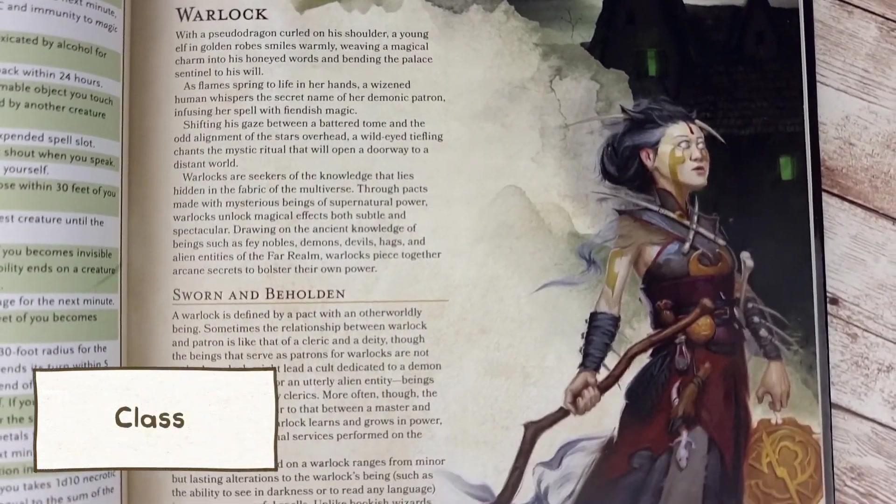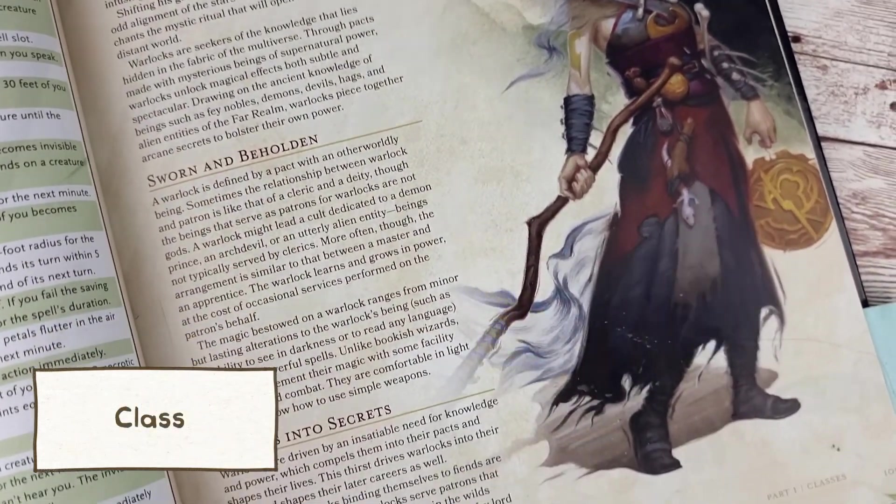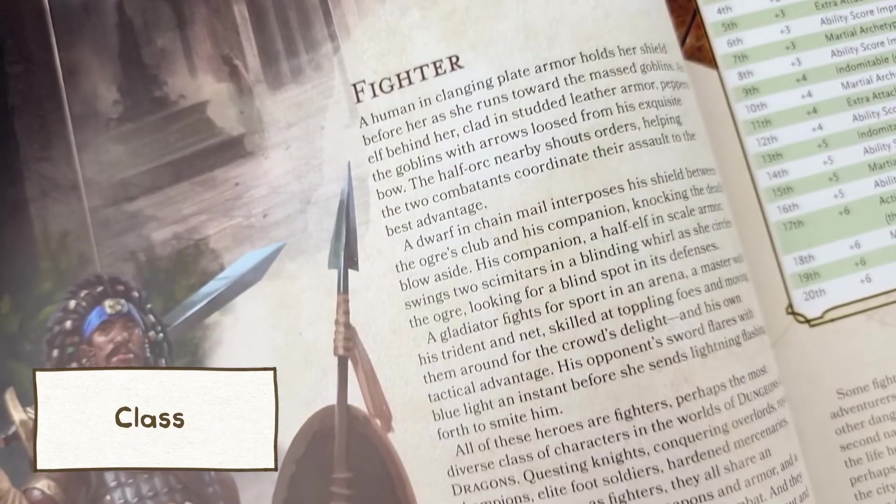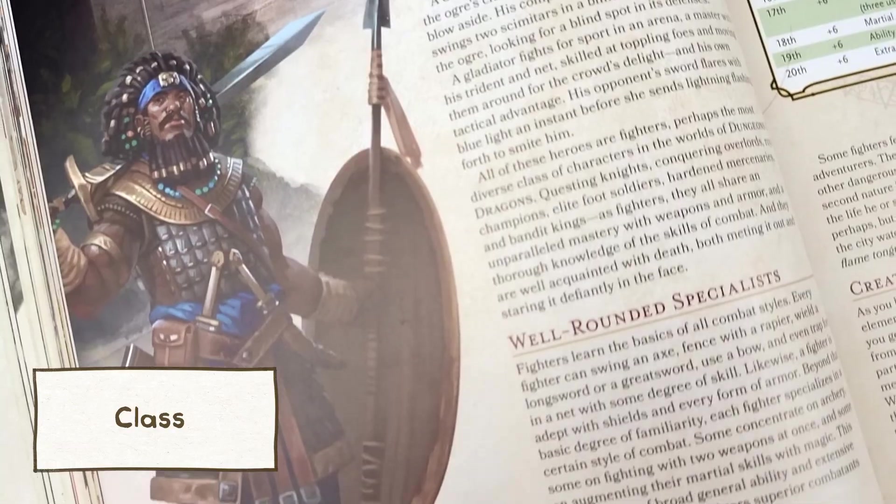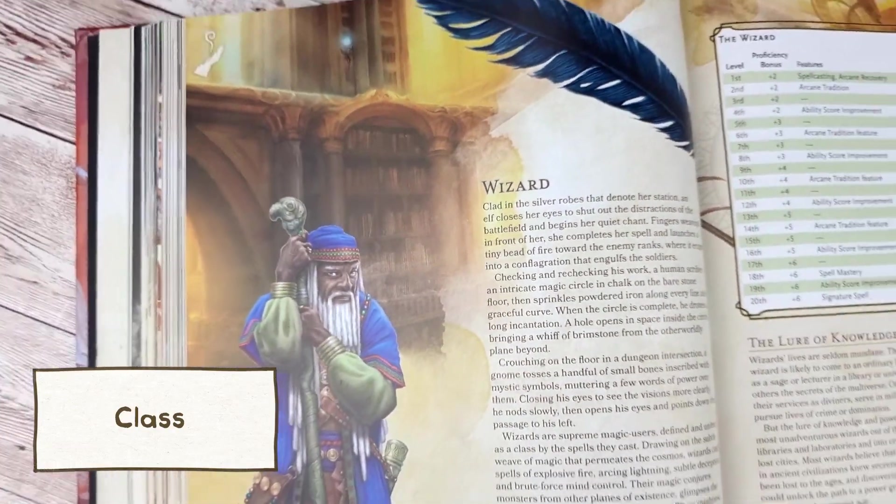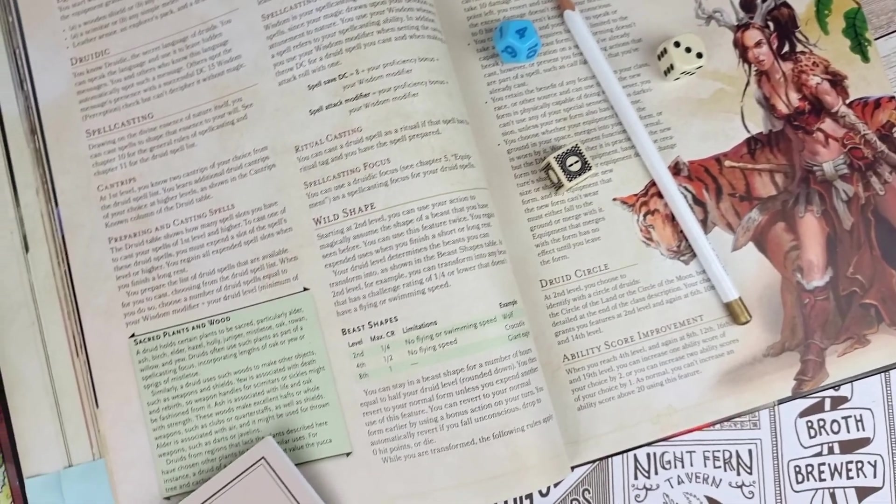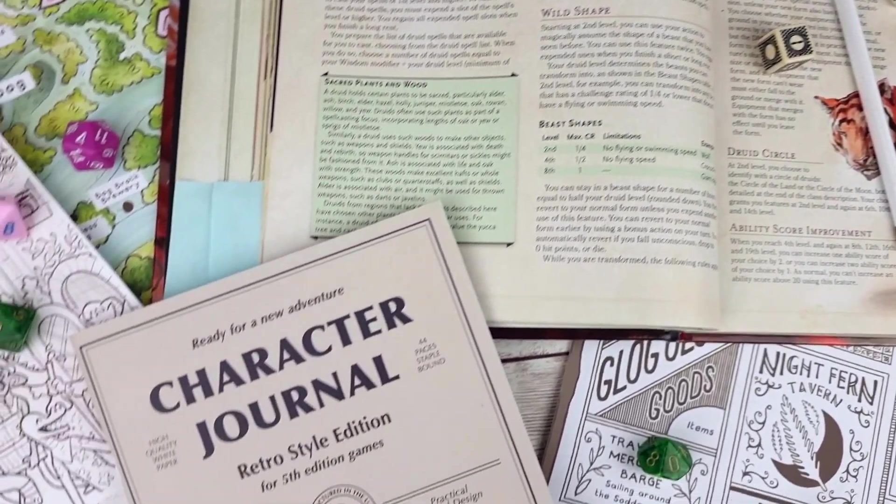Finally your character's class is a set of special skills and talents that you'll develop as you gain levels during the game. There are lots to choose from, for example you could be a fighter that has honed their skills with weapons or a wizard who's studied hard to learn all manner of useful spells. Once you've chosen your background, race or ancestry and class you're then ready to begin filling in your sheet.